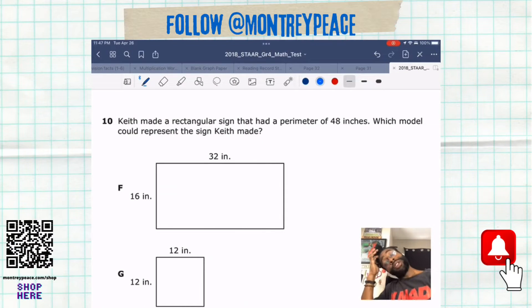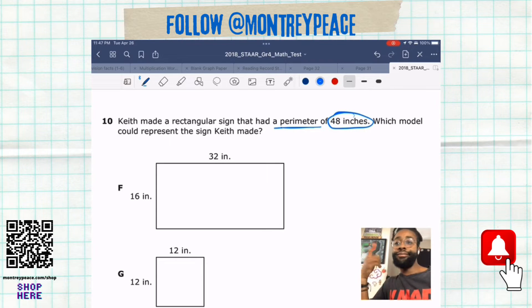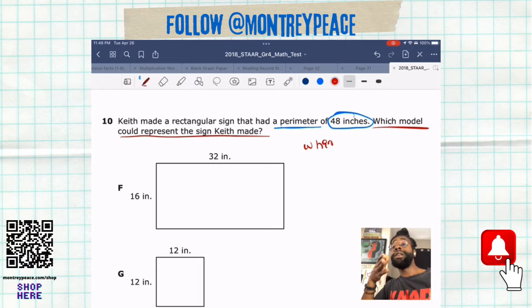All right, what up peacemakers, it's still the 2018 fourth grade STAAR. We're looking at a geometry style problem. It says Keith made a rectangular sign that had a perimeter of 48 inches. They want to know which one of these models represents the sign that he made.